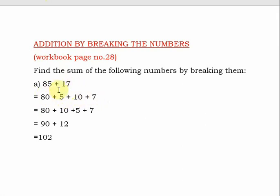We wrote the tens together — that is 80 plus 10 — and the ones together — 5 plus 7. 80 plus 10 gives 90, and 5 plus 7 is 12. So 90 plus 12 gives the final answer: 102.